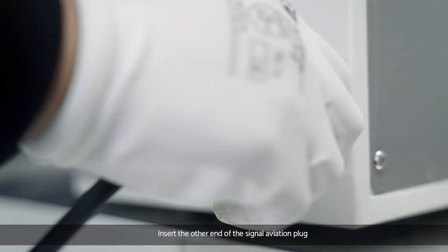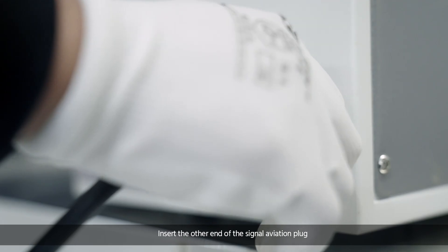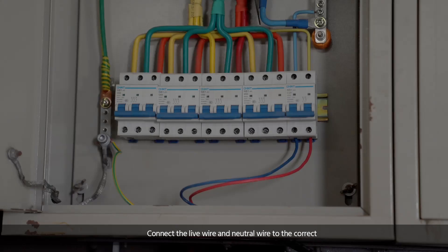Insert the other end of the signal aviation plug. Connect the live wire and neutral wire to the correct position of the 220V air protection switch and ground the ground wire.